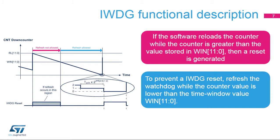This diagram illustrates how the Independent Watchdog operates. When the down counter reaches zero, the watchdog reset is activated. This happens when the application software did not refresh the watchdog on time. If the software refreshes the watchdog while the down counter is greater than the value stored in the window register, then a reset is generated as well. To prevent a watchdog reset, the refresh must occur when the down counter value is other than zero and lower than the time window value.